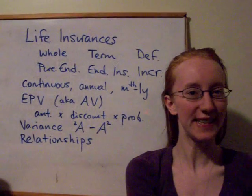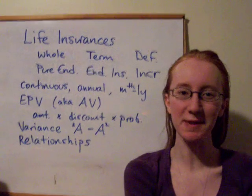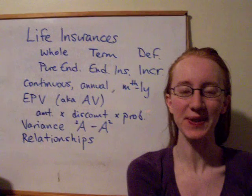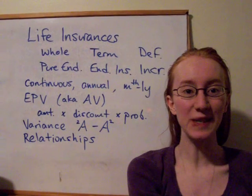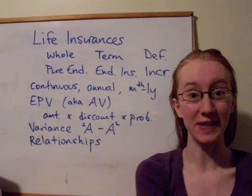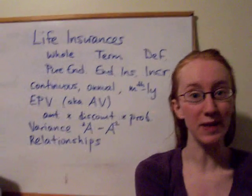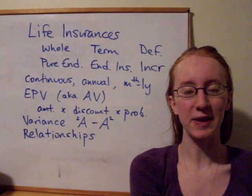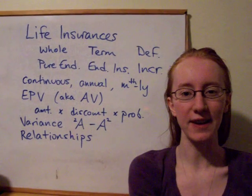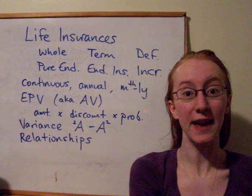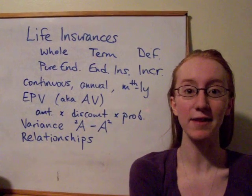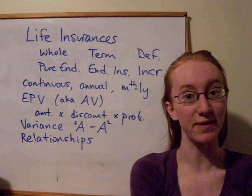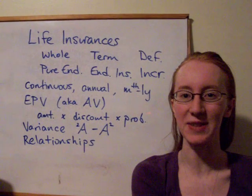Hi everyone, welcome to the double header video for weeks 6 and 7 for ACSI 232. In these two weeks we learned a whole lot of new stuff. We learned all about life insurances — these are benefits that depend on the death of the policyholder. They pay out either upon the death or sometimes upon the survival of the person to the end of a certain term.